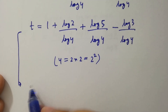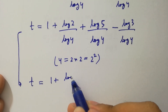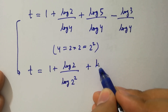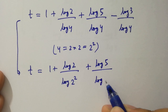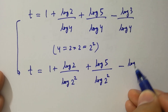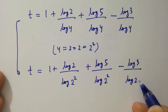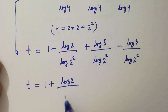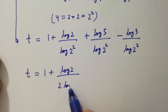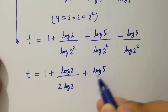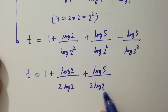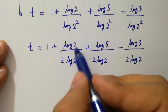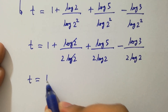T will be equal to 1 plus log 2 over log 2 squared plus log 5 over log 2 squared minus log 3 over log 2 squared. This equals 1 plus log 2 over 2 log 2, plus log 5 over 2 log 2, minus log 3 over 2 log 2. Here log 2 and log 2 cancel, giving 1 plus one half.